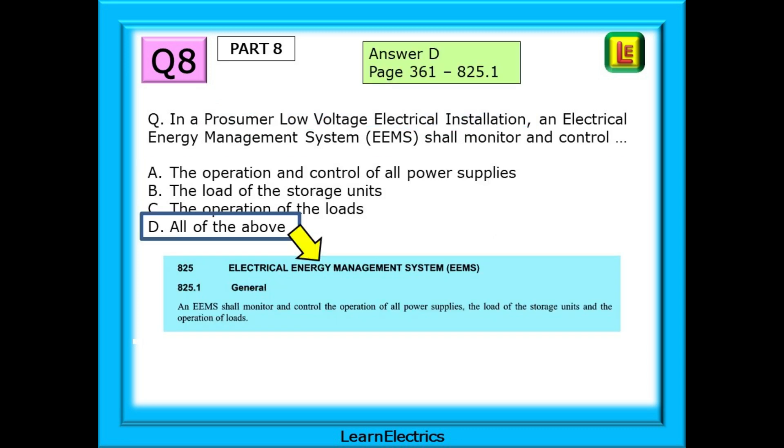On page 361 is regulation 825.1. All that we need to do is to match the words from the book to the words from the possible answers. And we notice that the wording of A, B and C all appear in the book. The answer is D. All of the above.